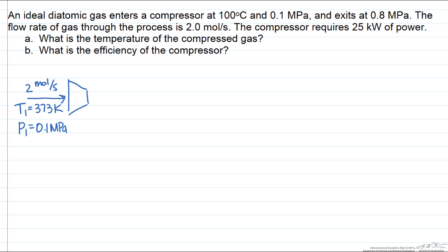We are also given information about the outlet conditions of the compressor, the compressed fluid, that the outlet pressure is 0.8 megapascals, but we don't know the outlet temperature and in part A we want to determine that. We are told that the amount of work required to do this compression is 25 kilowatts.